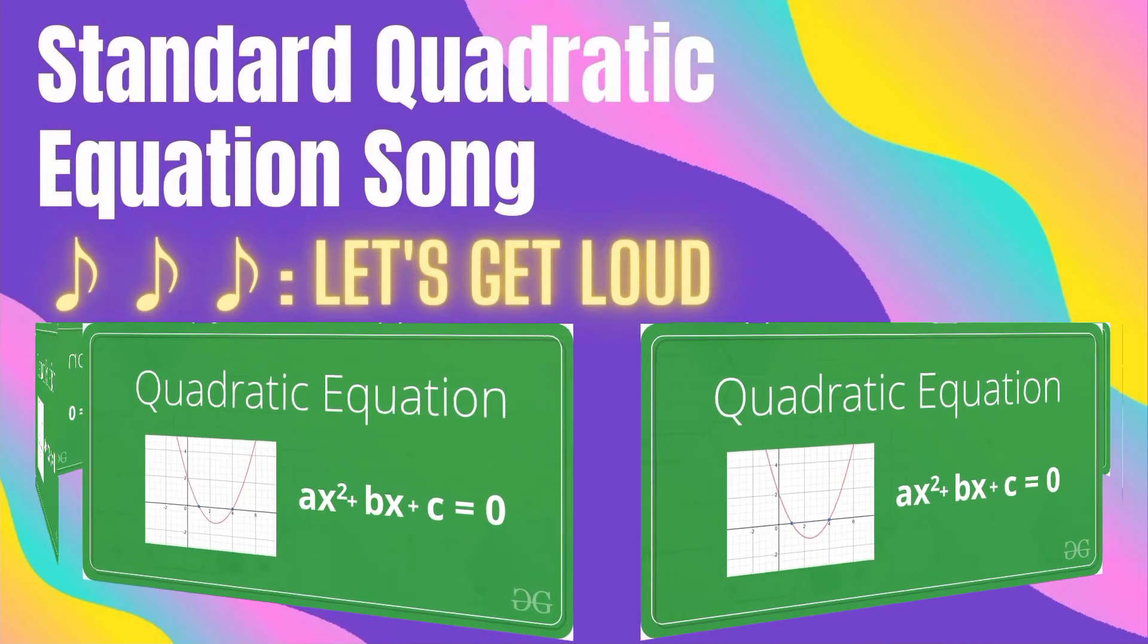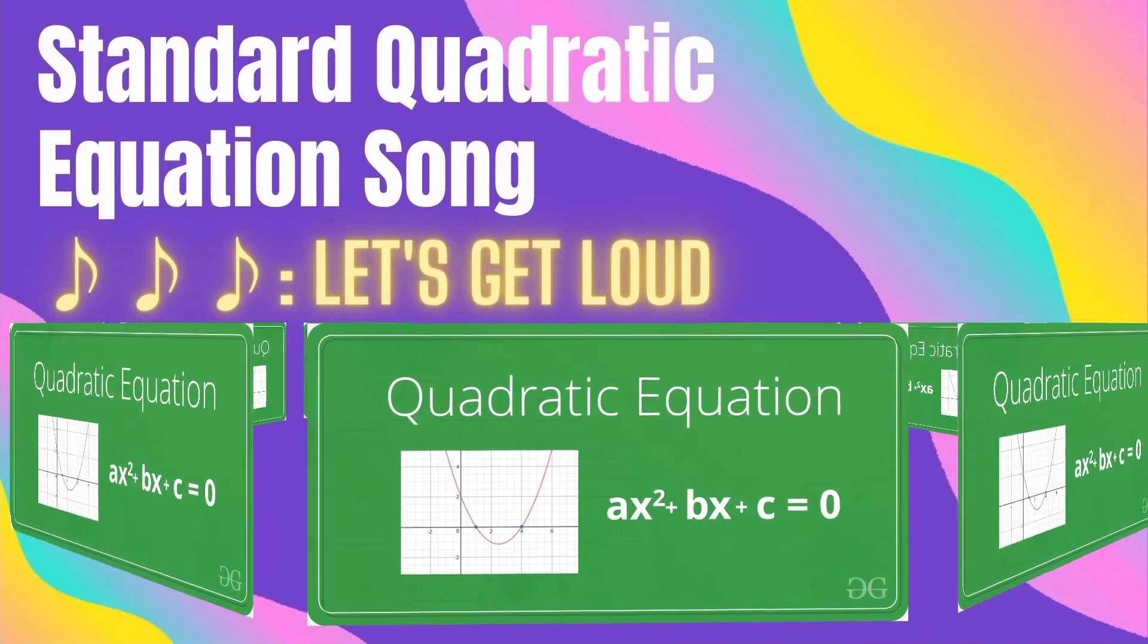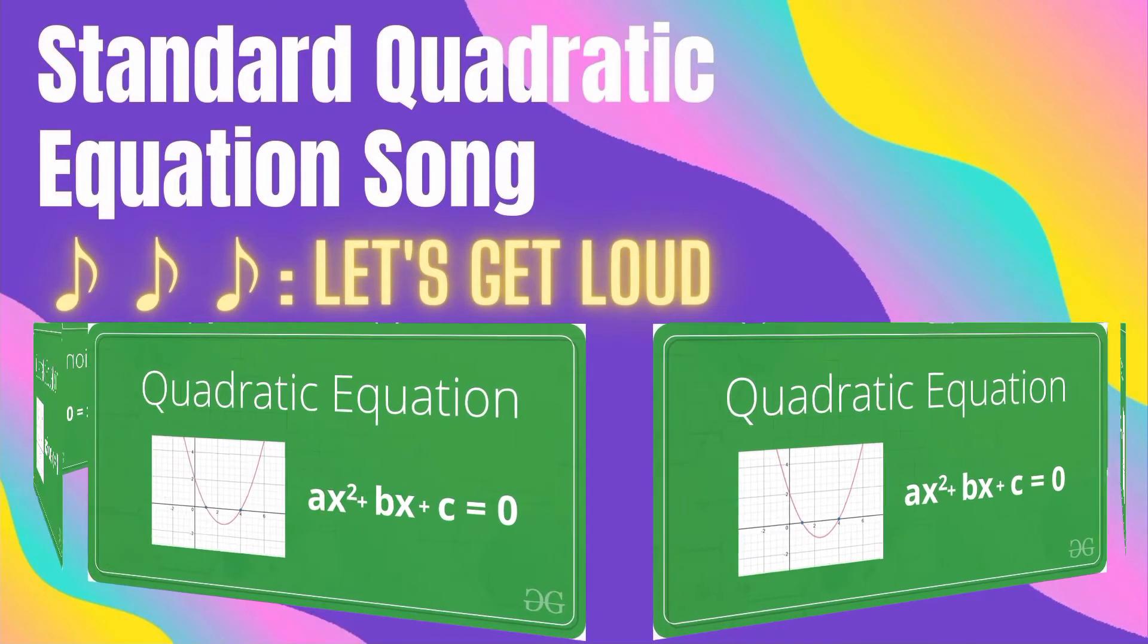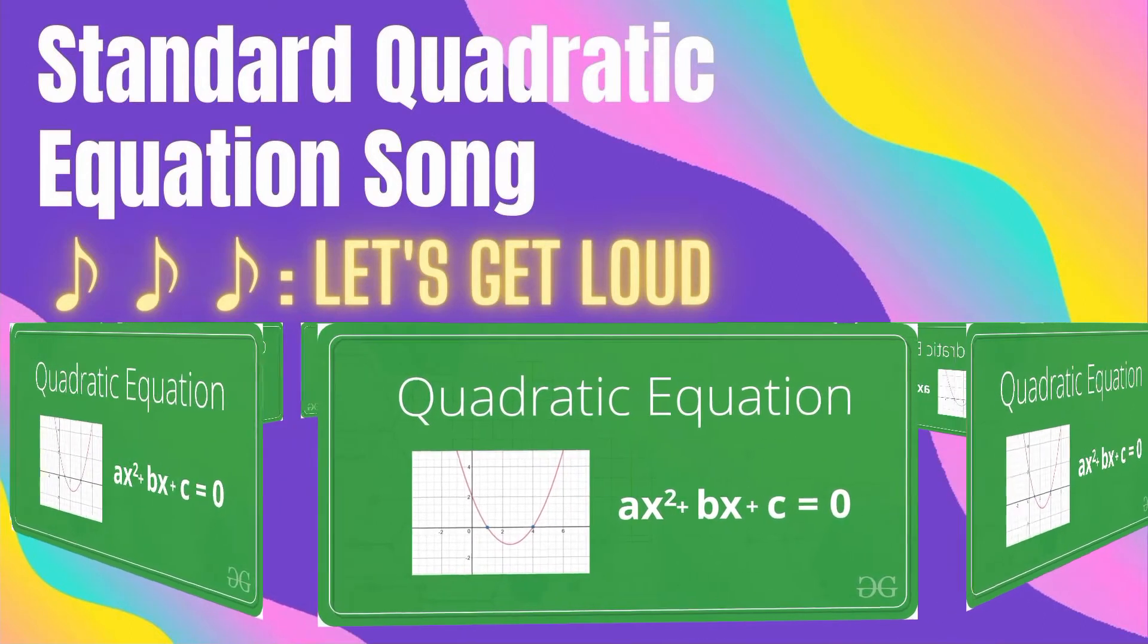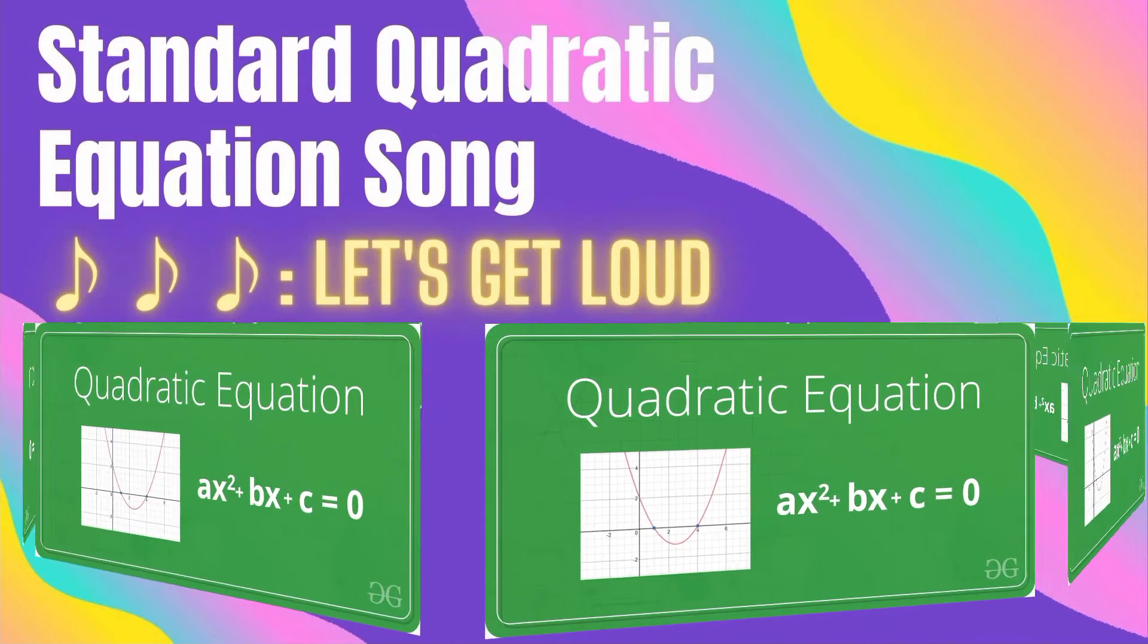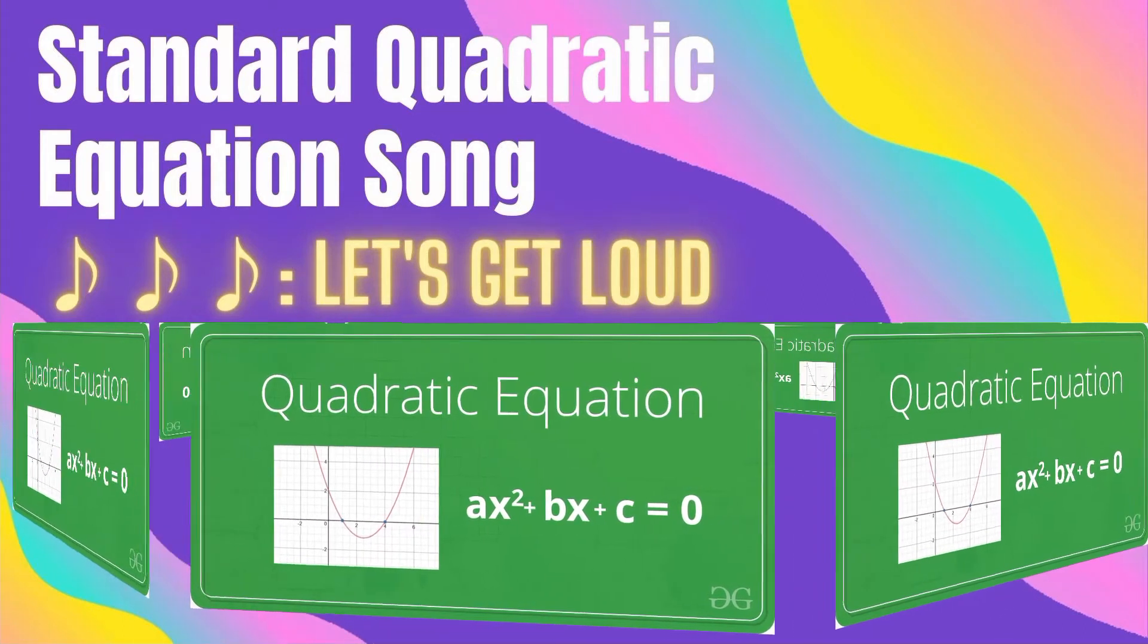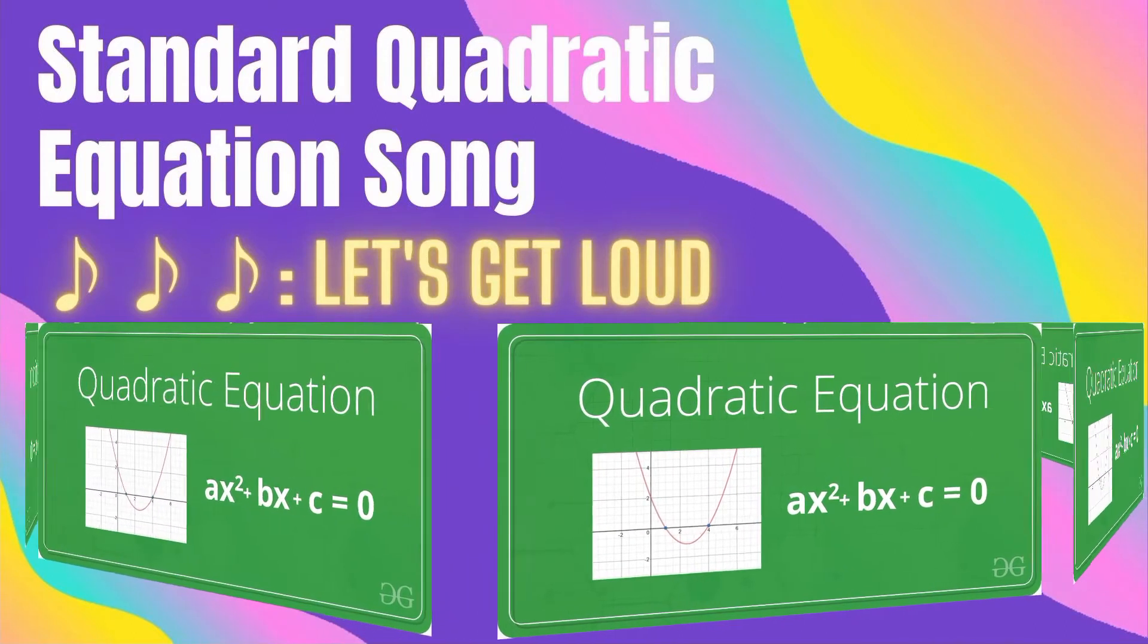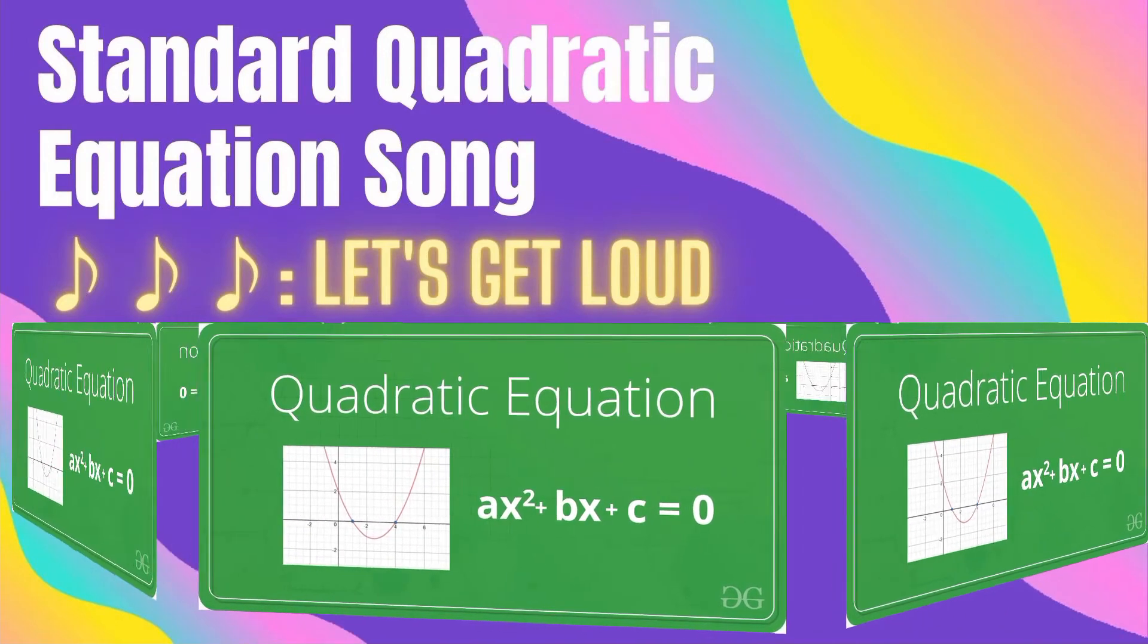A x squared plus B x plus C equals zero, standard form. A x squared plus B x plus C equals zero, standard form.